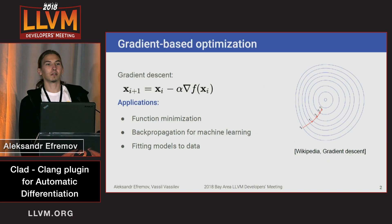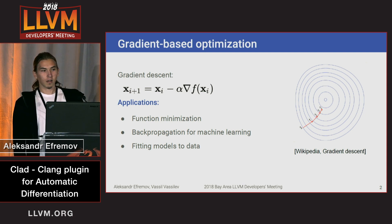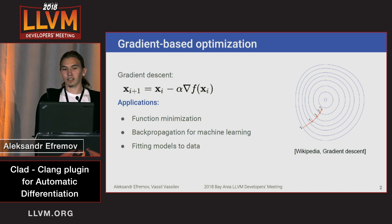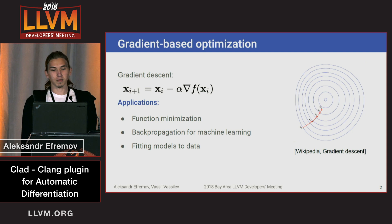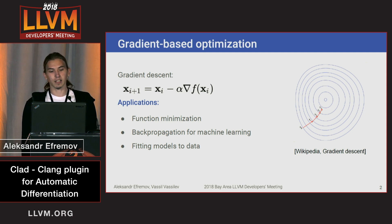First I am going to introduce what automatic differentiation is and what is our motivation for using it. The main idea is gradient-based optimization. If you have some mathematical function and you want to minimize it, a typical algorithm would start at some point and iteratively converge to the minimum based on the directions defined by your gradient. It has a lot of applications in different engineering fields — I think the most famous currently is backpropagation and deep learning.